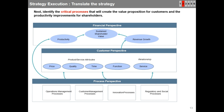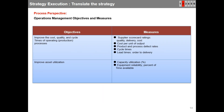Looking at operations management objectives and measures: there are two objectives. First, improve the cost, quality, and cycle times of operations — typical measures include supplier scorecard ratings (quality, delivery, cost), cost per unit of output, product and process defect rates, cycle times, lead times, and order-to-delivery time. Second, improve asset utilization — measures include capacity utilization percentage and equipment reliability as percent of time available.